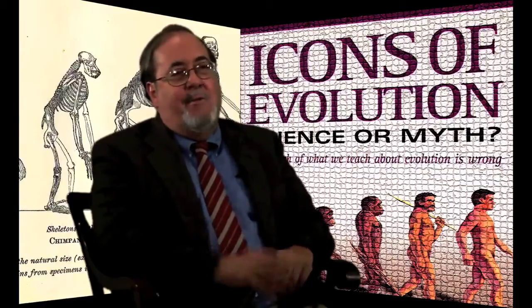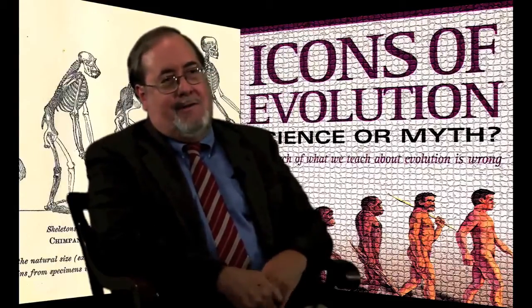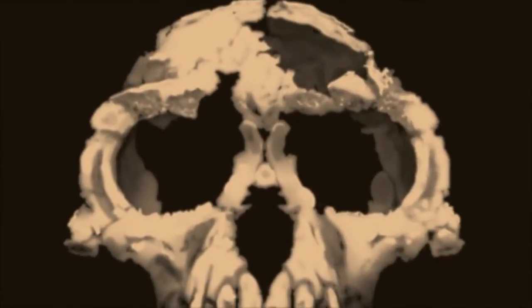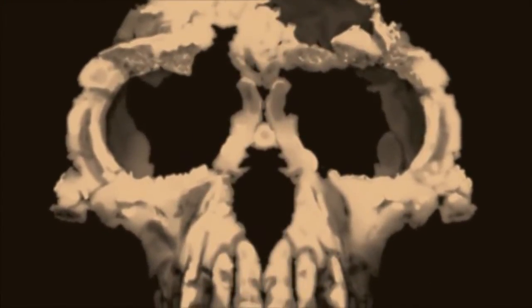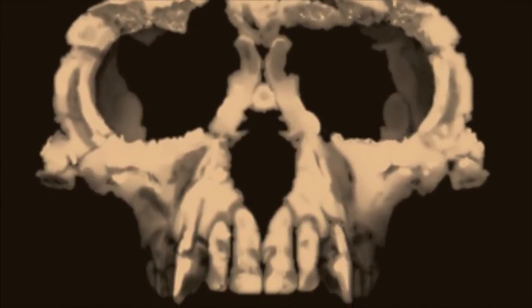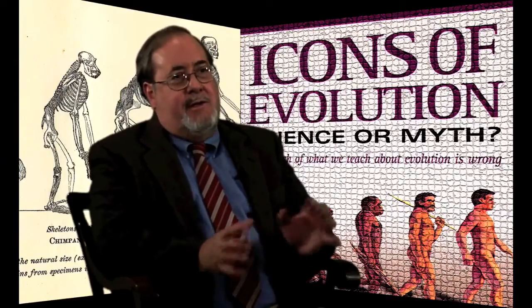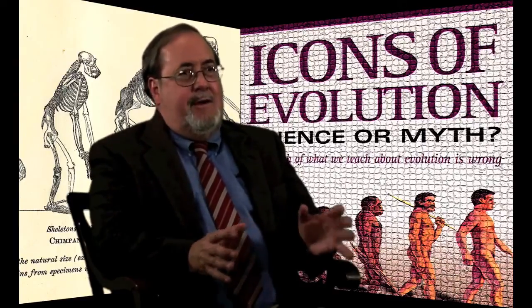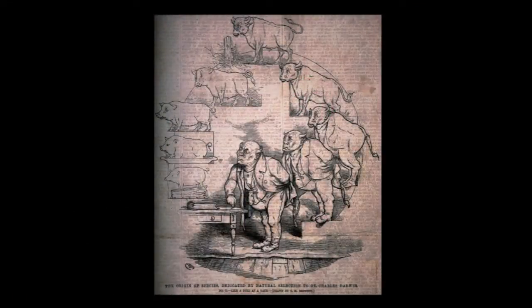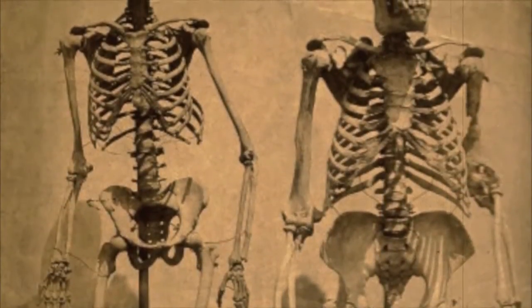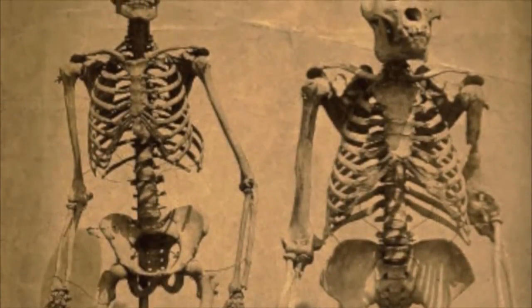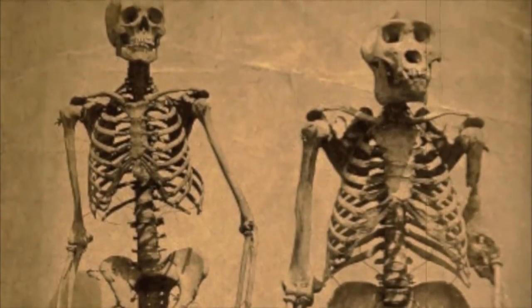Almost immediately they had another one to take its place: Ardipithecus ramidus, which is a much more plausible candidate to stick into the story, but which had also been known for 15 years. Why did it all of a sudden become the subject of all this hype? Obviously there's much more to the ape to human icon than just scientific evidence. In all these cases we have a story that's in need of evidence, and so whatever fossil turns up that appears to fit that story is hyped and milked for as much as Darwinists can get out of it.